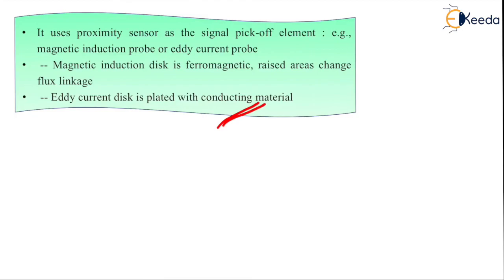This is how we have seen the digital signal generation methods like the sliding contact encoder, magnetic encoder, and the proximity sensor encoder. Thank you.